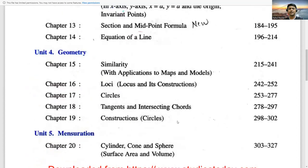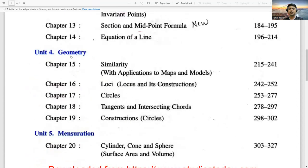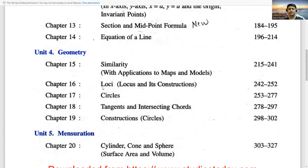Unit 4 has a section related to Geometry, in which the chapter is Similarity. In that we will see its application to maps and models. Then Loci, that is locus and its constructions. Then Circles, Tangents and Intersecting Chords. Then Construction of Circles. That we will see in the geometry section of Unit 4.